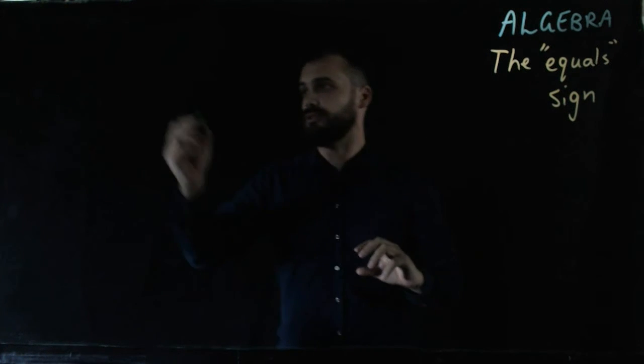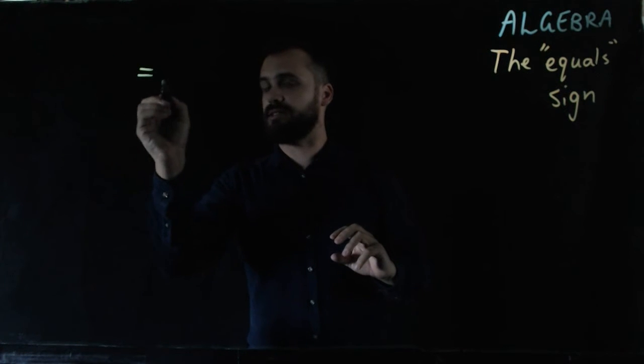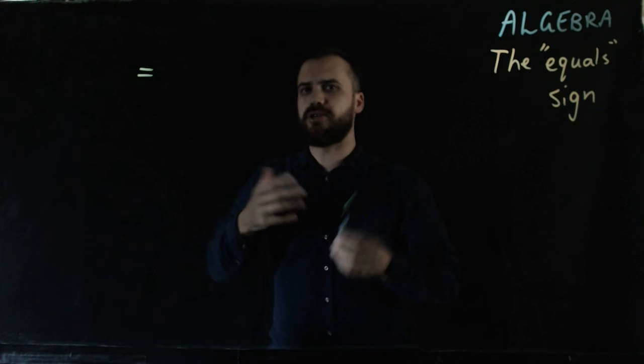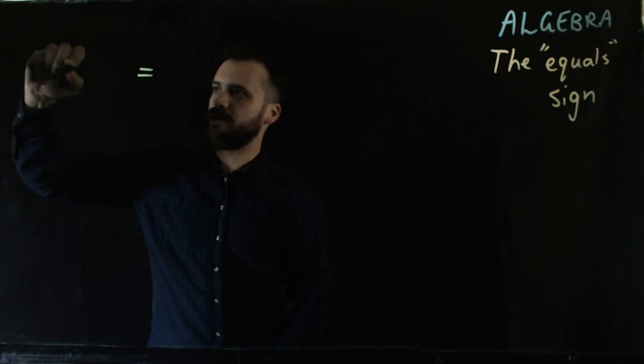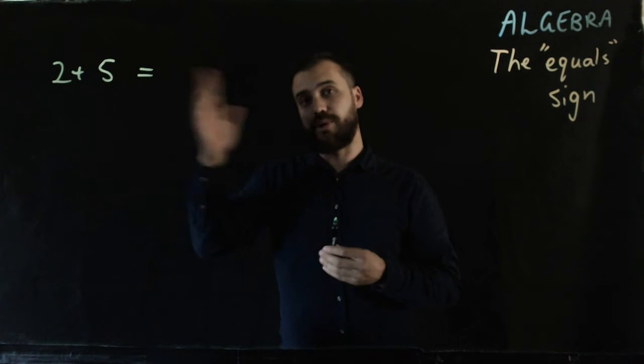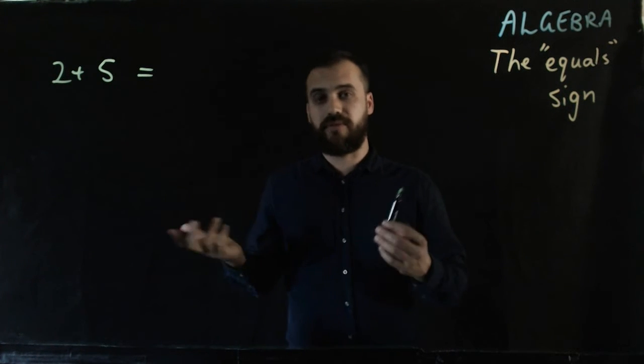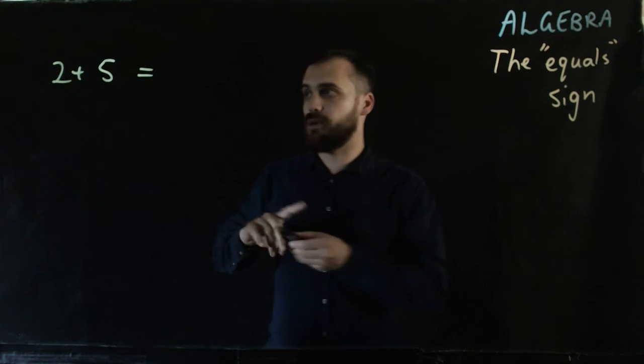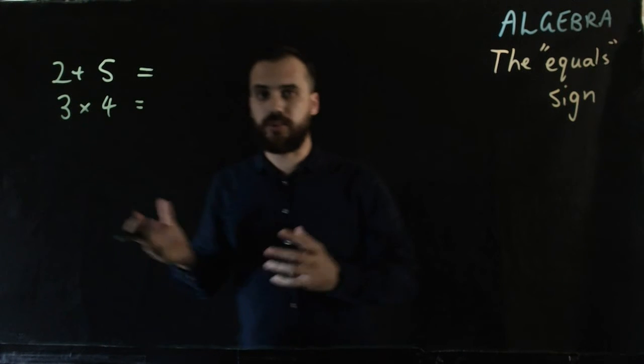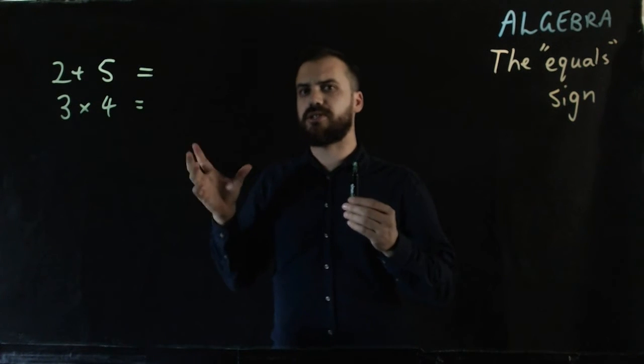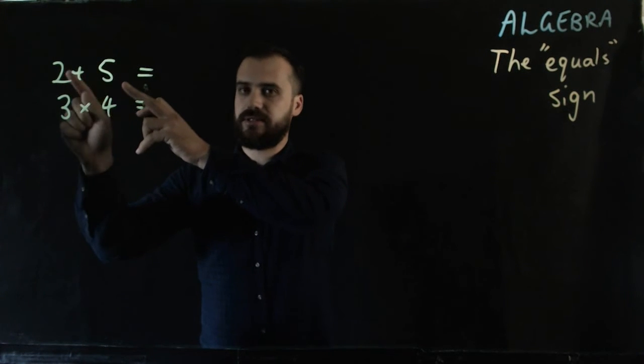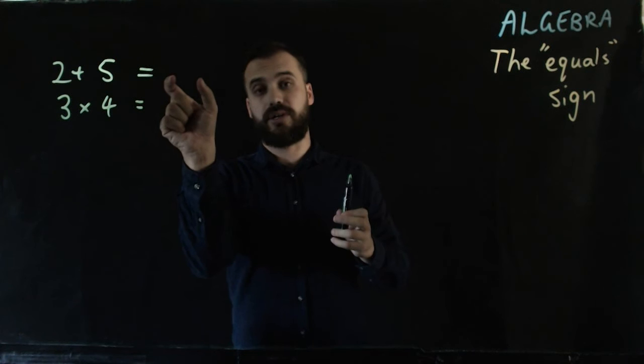Now you guys all know what the equals sign looks like. It looks like this. And you are used to the equals sign being used in this kind of way. Someone will say to you, 2 plus 5 equals, and then you're supposed to find out what 2 plus 5 equals. You add them together. Or you might do something like 3 times 4 equals. And so you're used to this idea where on this side, there's some maths and then equals, and then you figure out this side.